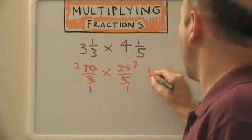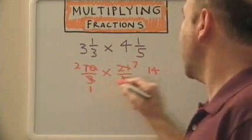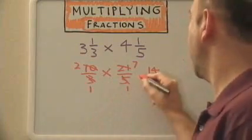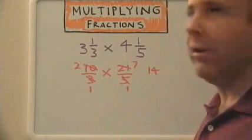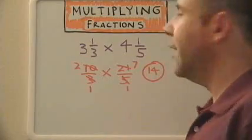Multiply across. Three times seven is fourteen. One times one is one, but we don't need to put our one down as a denominator. And our final answer is fourteen.